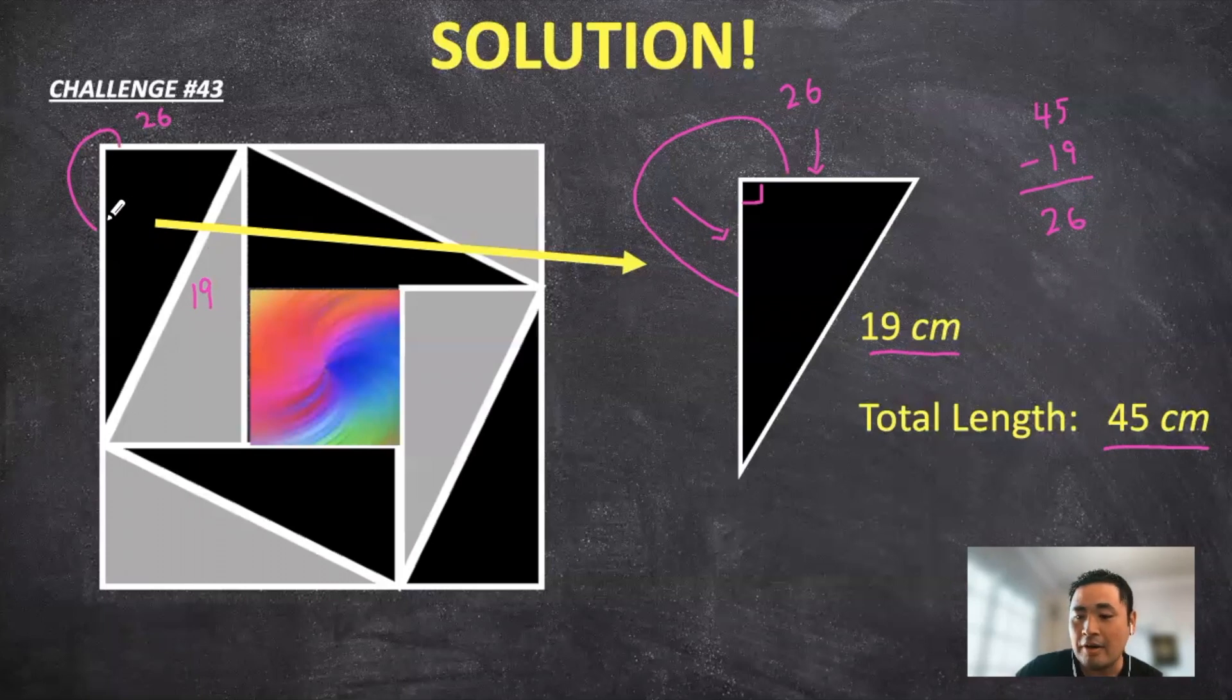Because all eight triangles are the same, if you look at the entire diagram, if these two sides right here are 26, 26, that means then that this long side and this short part of the other triangle also has to equal 26. Ooh, pretty cool, huh?